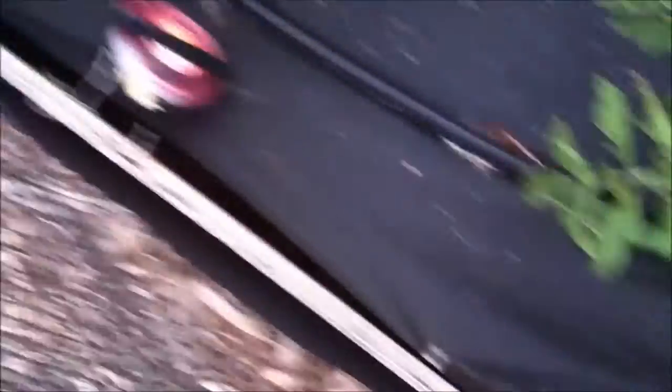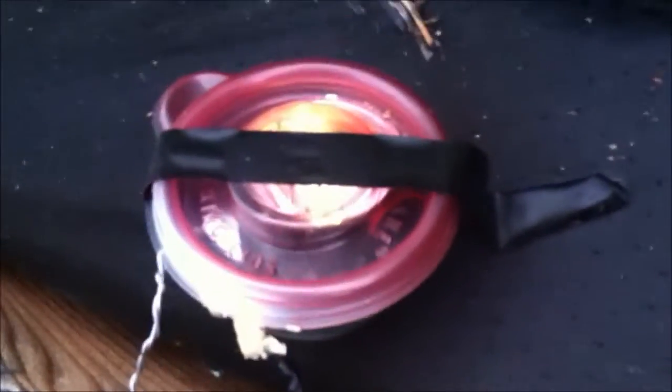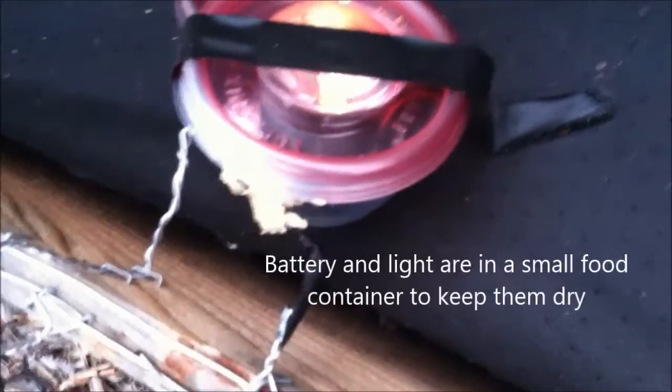So these two wires go all the way around the flower box and they come to the housing area where I have a 9-volt battery and a light in there. And it's just a straight circuit. I'll put a diagram of it on the website.